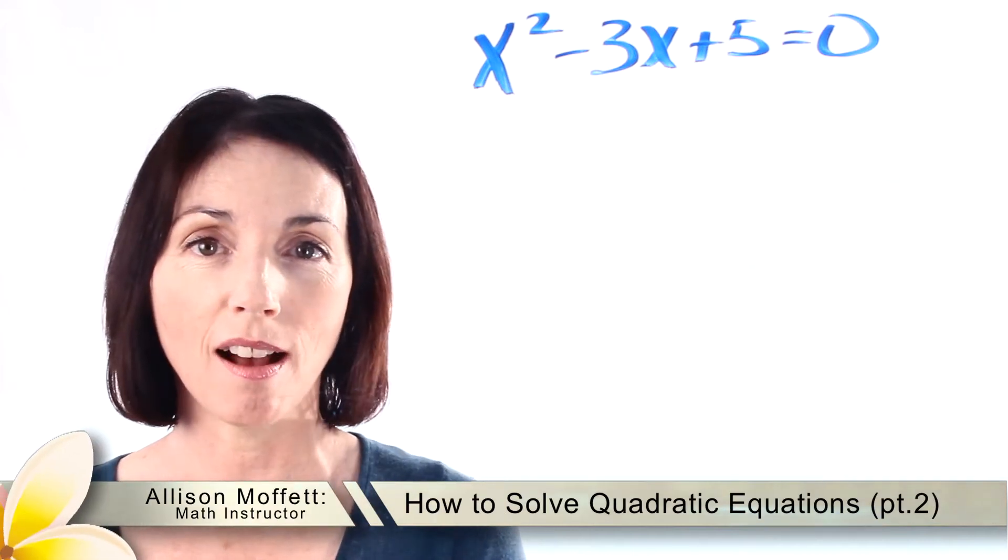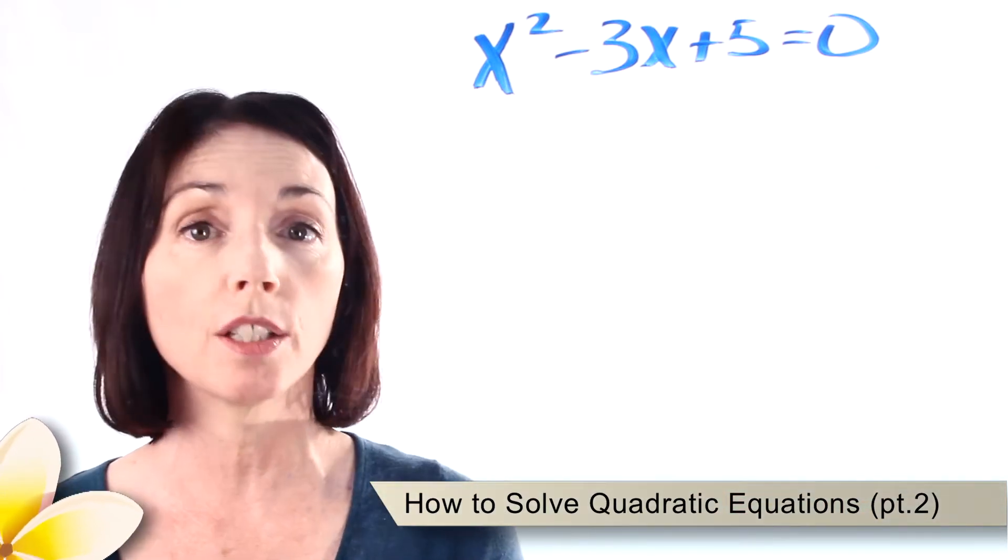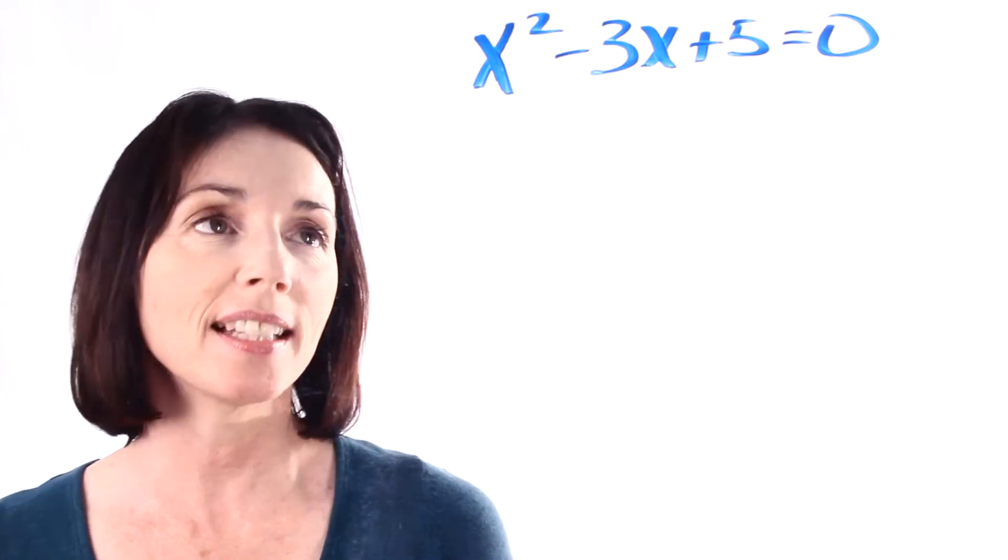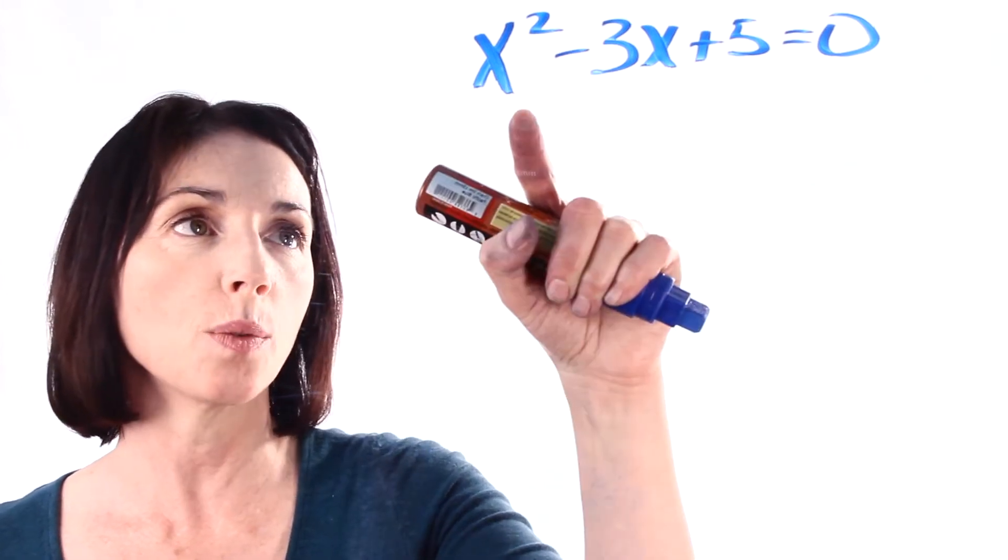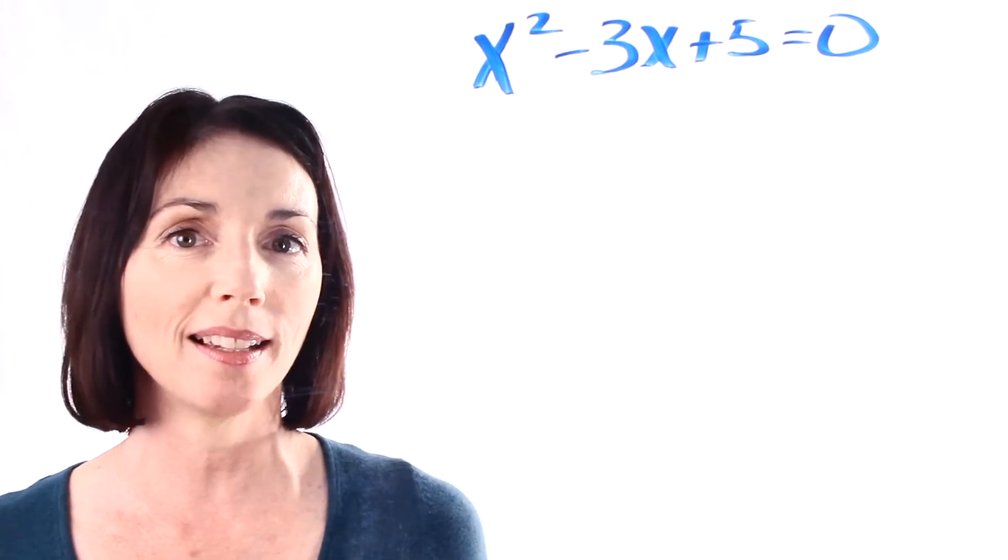Hey, it's Alison from Mahalo.com and today we're going to do another example of using the quadratic formula to solve a quadratic equation. This is the equation we'll use: x squared minus 3x plus 5 equals 0. So let's plug it into the formula and see what happens.